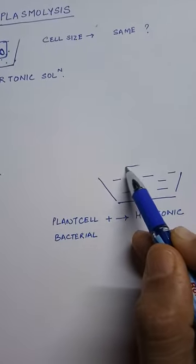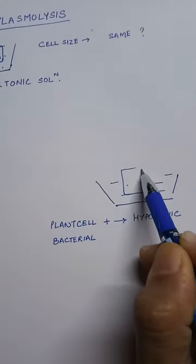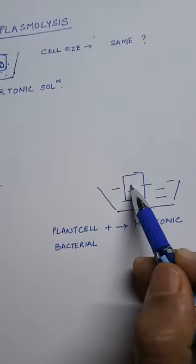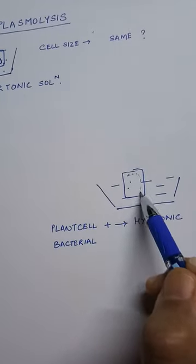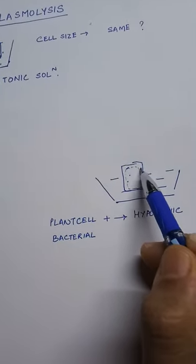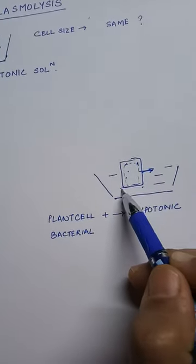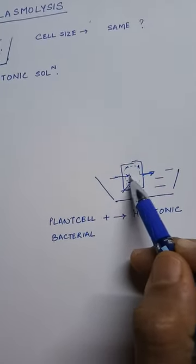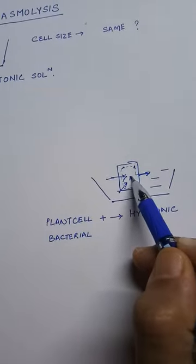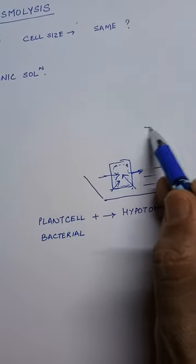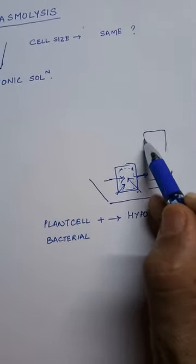When they are put in hypotonic medium, they will gain water by the process called osmosis. So this is plant cell. This is cell membrane, nucleus. It is put here. What will happen? It will gain water through osmosis.